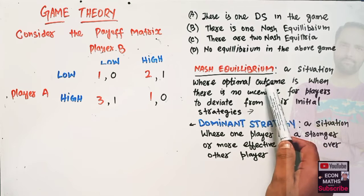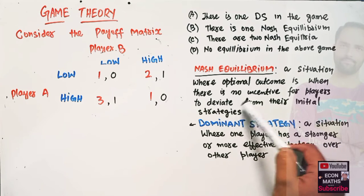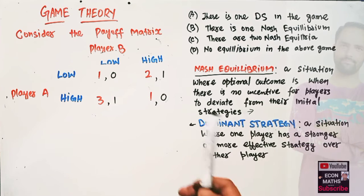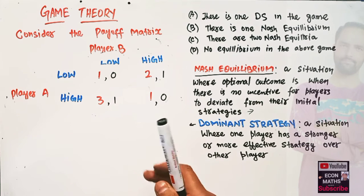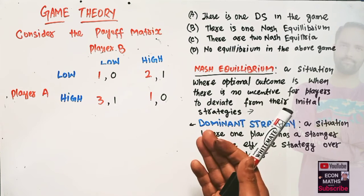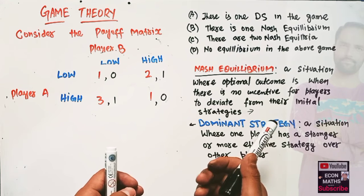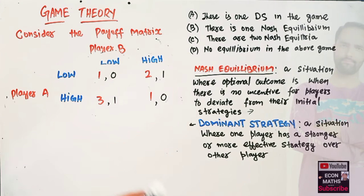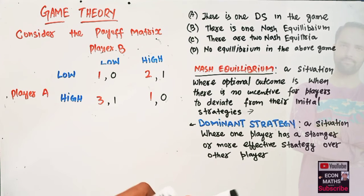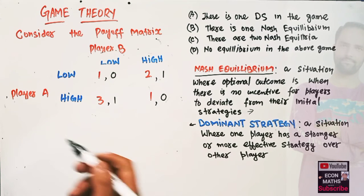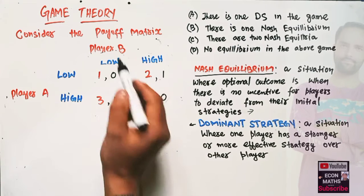Now let us find the Nash equilibrium. By Nash equilibrium we mean a situation where the optimal choice is when there is no incentive for players to deviate from their initial strategies. Simply put, Nash equilibrium occurs when one player chooses his best strategy given that the opponent has also chosen their best strategy. Let us find the Nash equilibrium in this game.